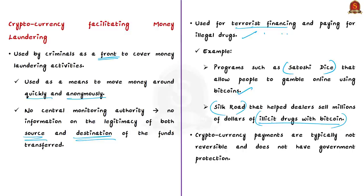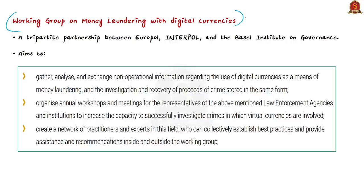Additionally, cryptocurrencies do not have the same protections as when using rupees or US dollars. Scammers ask people to pay with cryptocurrency because they know such payments are typically not reversible. Because of this current nature of cryptocurrency, it is helpful in money laundering and other criminal activities. That is why international law enforcement agencies are sharing their experiences and knowledge on these types of crimes — this is where the Working Group on Money Laundering with Digital Currencies and the conference become important. This working group is a tripartite partnership between Europol, Interpol and the Basel Institute on Governance.